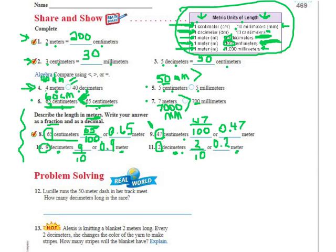Problem solving — Lucille runs the 50-meter dash in her track meet. How many decimeters is this? We're changing meters to decimeters. Going back to the chart: 1 meter equals 10 decimeters, so we multiply by 10. 50 times 10 is 500. So it would be 500 decimeters.